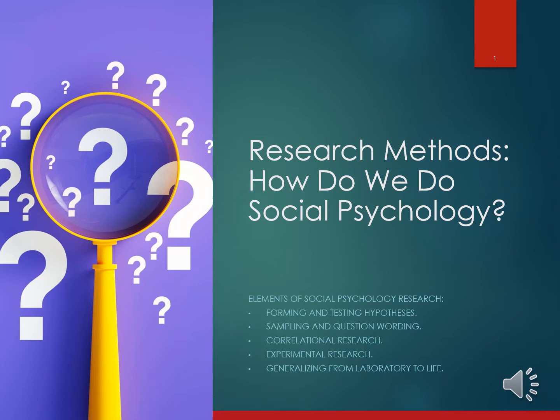If half of the class is told that research concerning attraction between people has demonstrated that opposites attract, and the other half is told that research has demonstrated birds of a feather flock together, most students in both groups will report believing that the outcome is true and that they would have predicted the outcome before they heard about it. But of course, both of these contradictory outcomes cannot both be true — either opposites attract or birds of a feather flock together.